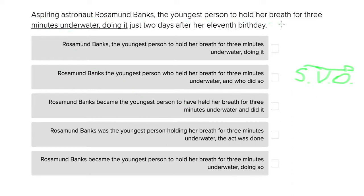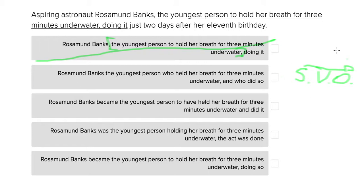The first option: 'Aspiring astronaut Rosamund Banks, the youngest person to hold her breath for three minutes underwater, doing it just two days after her 11th birthday.' Here we're given a very large subject — aspiring astronaut Rosamund Banks — with the clause 'the youngest person to hold her breath for three minutes underwater' in between commas, meaning it's optional. So aspiring astronaut Rosamund Banks, doing it just two days after her 11th birthday doesn't make sense — we have the subject but we're not told what she did. There's no action, so this doesn't follow proper English sentence structure.